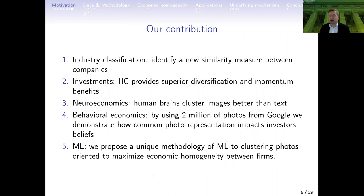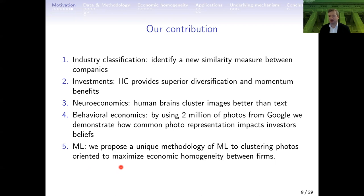Our contributions span several areas. First, in industry classification, we identify a new similarity measure between companies. From the investments perspective, our classification provides superior diversification benefits and momentum strategy benefits. From neuroeconomics, we present that humans cluster images better than text. From behavioral economics, using 2 million photos from Google, we demonstrate how common photo representation impacts investor beliefs. From the machine learning perspective, we propose a unique methodology to cluster photos oriented to maximize economic homogeneity between firms — not just finding similar objects, but finding only those objects really connected with the business activity.